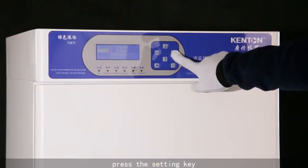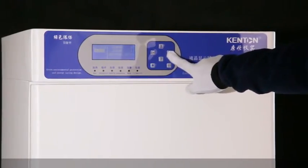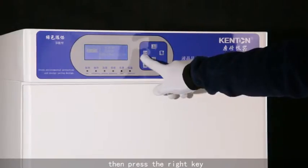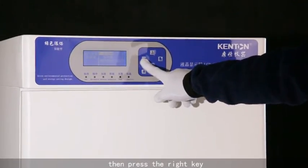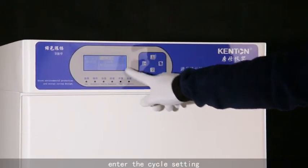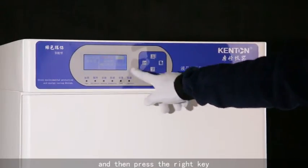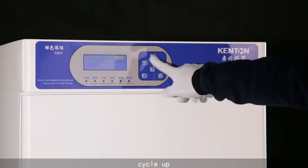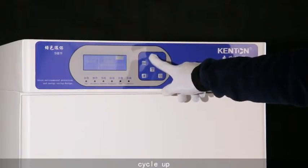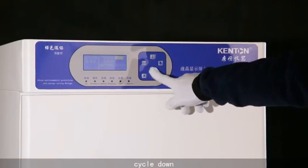Press the setting key, then press the right key. Enter the cycle setting, and then press the right key. Cycle up, cycle down.